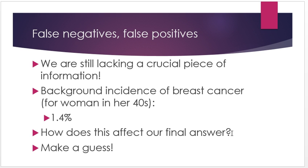So how does that affect the final answer? Now we've got these three numbers: the false positive rate, the false negative rate, and the background incidence. She's looking at this positive result — what should be her estimate of the probability that she actually has breast cancer and has to do more invasive procedures? It's a very worrisome situation.